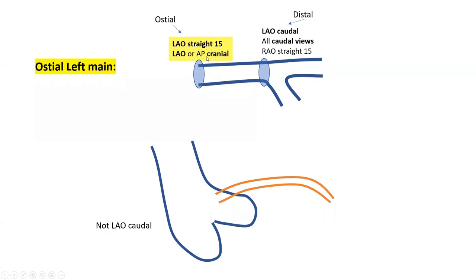Cranial views tend to be good, as does LAO straight. This is unlike what many people think — caudal views, including especially LAO caudal, are not great for the ostium of the left main. LAO caudal superimposes the cusp and contrast spilling inside the cusp over the ostium of the left main, so you won't see the ostium well delineated. Caudal views, including LAO caudal, are good for the distal left main, not so much for the ostium.